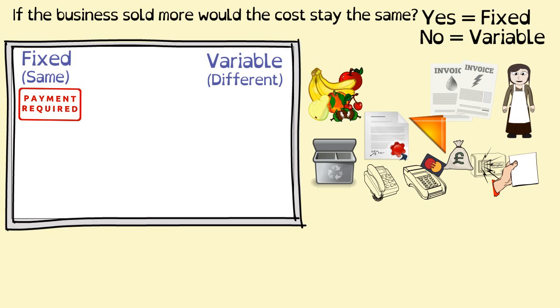What about ingredients? If the business sold more, would that running cost stay the same? No, if I had more customers I would have to buy more ingredients, and therefore it would be different and be a variable cost. Let's go quicker through the rest. So the utilities, electricity and gas - the more customers I have, the more electric and gas I probably use for the blenders and equipment, so it would be a variable cost.